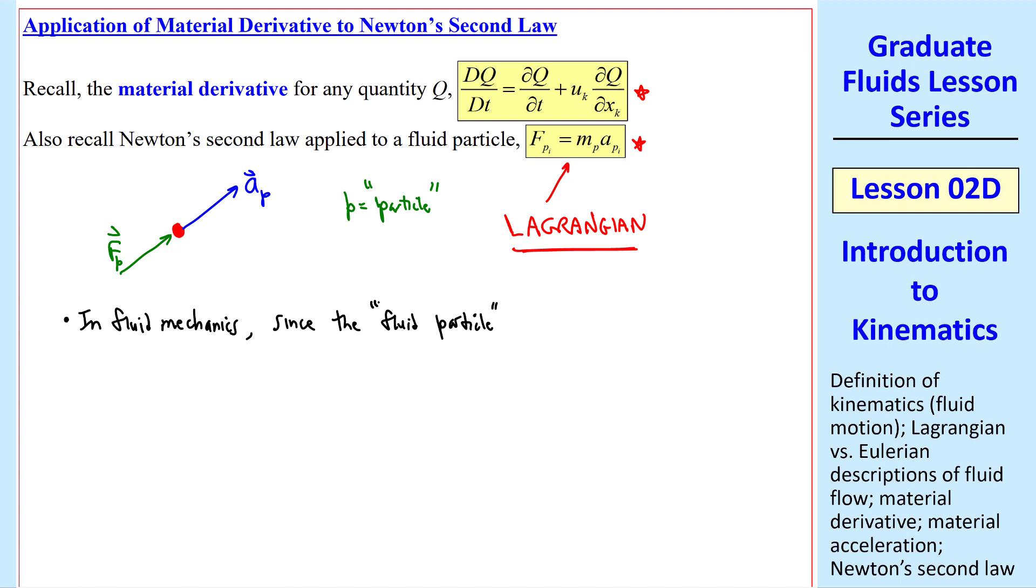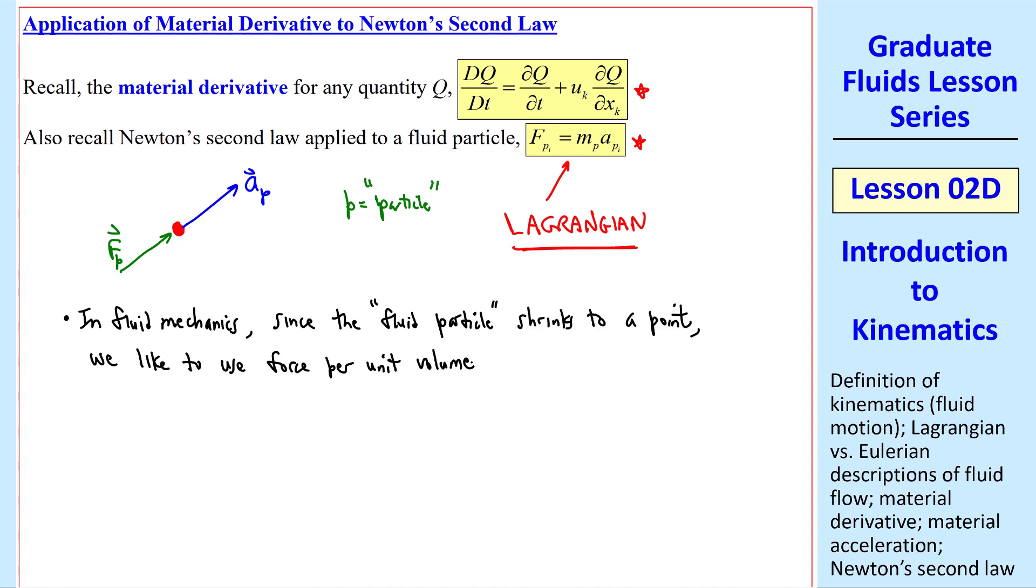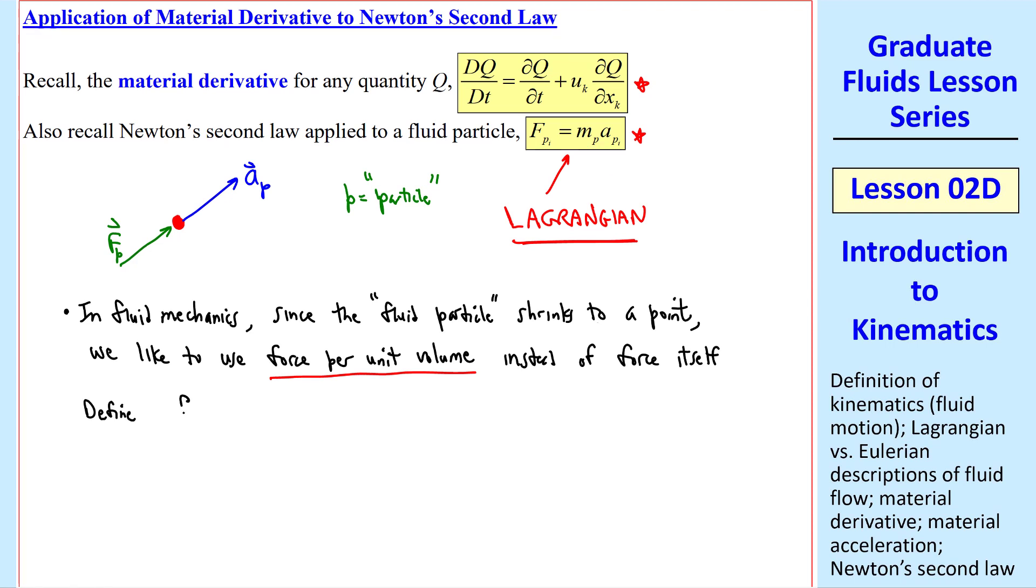in fluid mechanics, since the fluid particle shrinks to a point in the flow, we like to use force per unit volume instead of force itself. Otherwise, this mass would go to zero. So let's define little fpi equal fpi over volume. And rho p, the density is mp over volume.